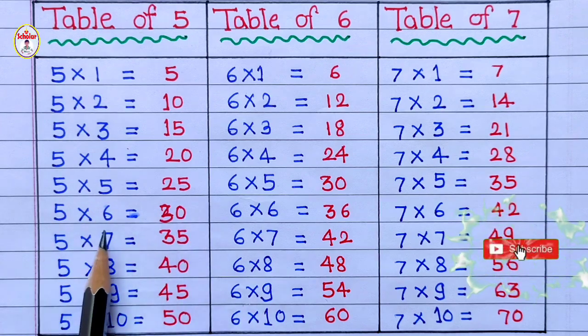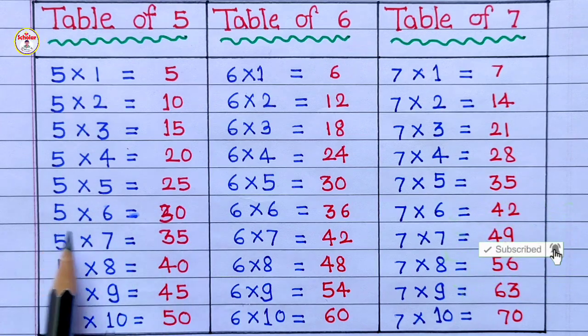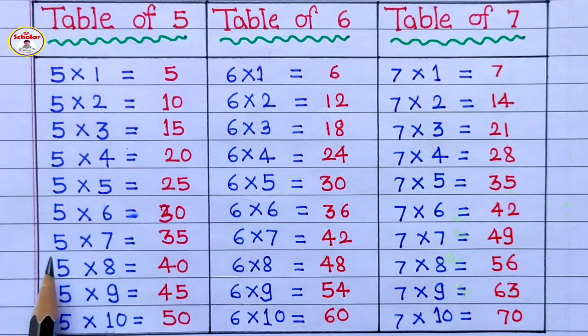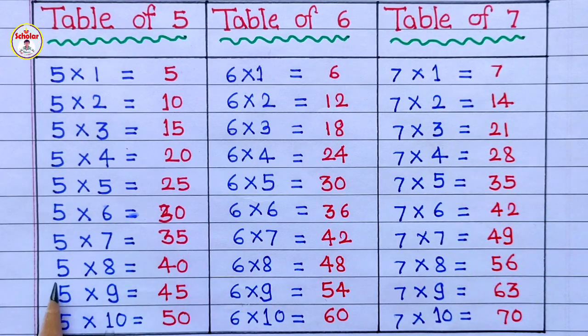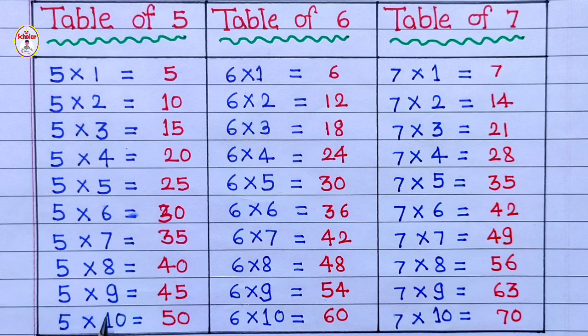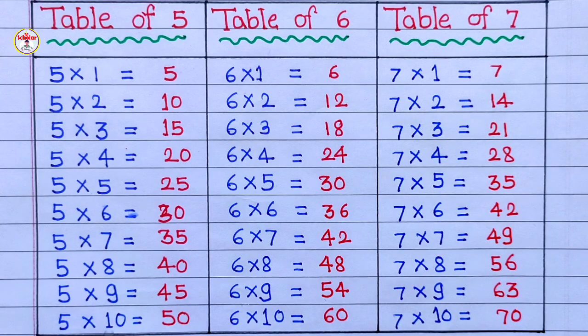5 6's are 30, 5 7's are 35, 5 8's are 40, 5 9's are 45, 5 10's are 50.